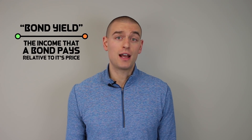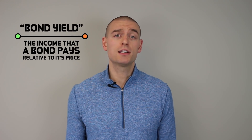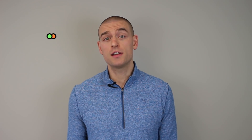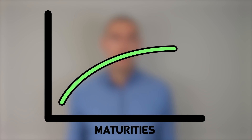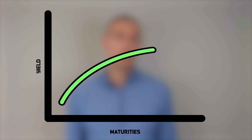Bond yield is a term that describes the income that a bond pays relative to its price. The yield curve is a plot of yields for bonds of various maturities. On the left side of the chart we have shorter maturities, and on the right side we have longer maturities. On the y-axis we have yields. The term premium is a well-documented risk factor that explains the differences in bond returns.